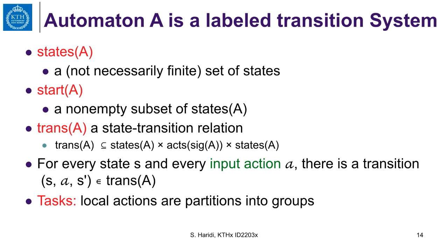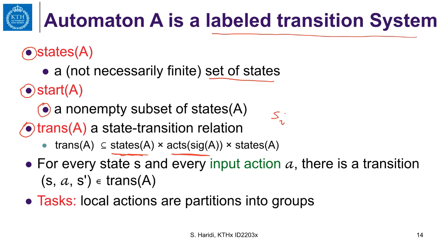Automaton A is a labeled transition system. We have a set of all states — which can be infinite — a non-empty set of initial (or start) states, and a set of transitions. A transition takes an input state Si, an action from the signature of the automaton, and moves to an output state Si+1. We write this as (Si, A, Si+1). The set of transitions of A is a set of such triples, where each tuple has three elements: a state, an action, and another state.